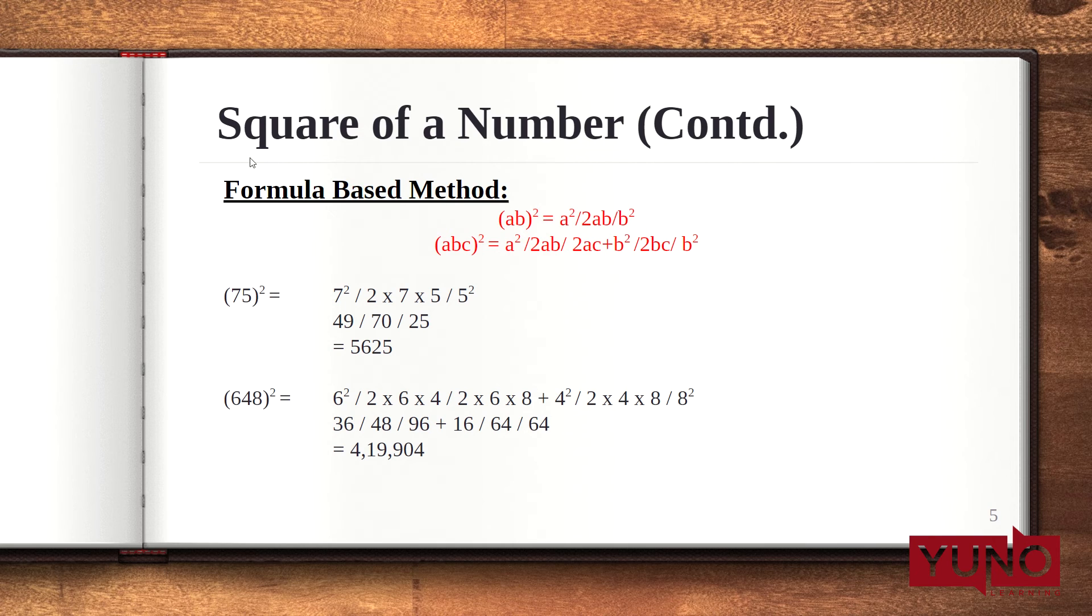Let's see an example. For 75 square we need to find out. Here, a is 7, b is 5. So, the first step is calculate square of 7. Then, multiply 2 with 7 and 5 and write the 5 square. Now, solving this, 7 square is 49. 2 times 7 is 14. 14 times 5 is 70. 5 square is 25. Now, to balance these numbers and to get the final answer, we will write the end digit that is 5 here. This 2 is carry forwarded to 70 that becomes 72. So, 2 comes in our answer and 7 is carried to 49. 49 plus 7 is 56.